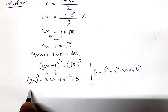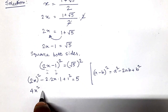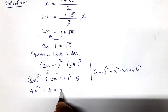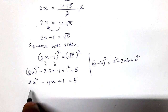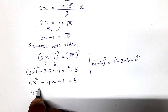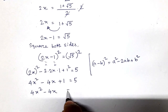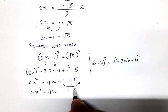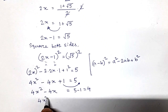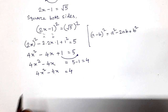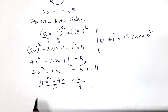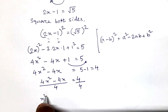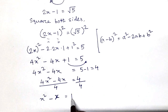Expanding: (2x)² is 4x², minus 2 times 2 times 1 gives minus 4x, plus 1 squared which is 1, equals 5 on the right. Keeping 4x² minus 4x on the left and taking 1 to the right gives 5 minus 1 equals 4. So we have 4x² minus 4x equals 4. Now we divide both sides by 4.